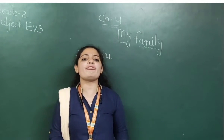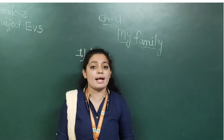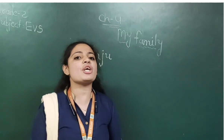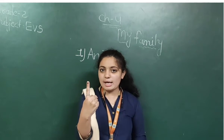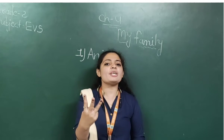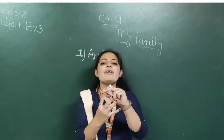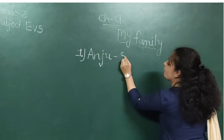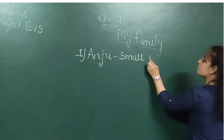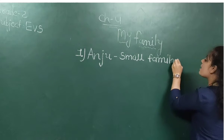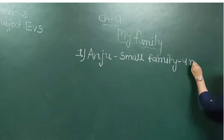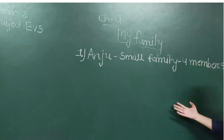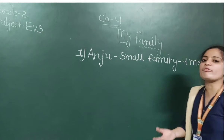Anju loves her family. Anju's family has four members — Anju's mother, Anju's father, and Anju's brother. Total four members are there. So Anju's family is a small family because she has only four members. If a family is small, then we can call it a nuclear family.